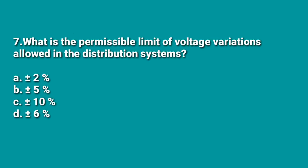The next question is: what is the permissible limit of voltage variations allowed in the distribution system? A: ±2%, B: ±5%, C: ±10%, D: ±6%. The answer is ±6% — voltage variations of ±6% are allowed in the distribution system.